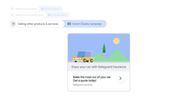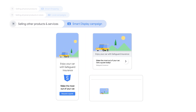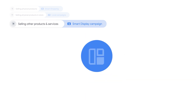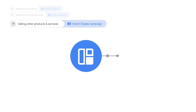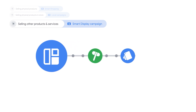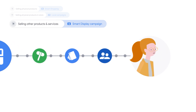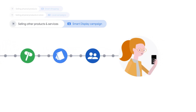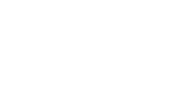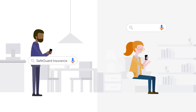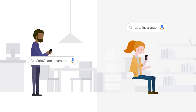Smart Display is the most effortless way to reach more customers across Google Display. This campaign type automatically adjusts your bids, creatives, and target audiences, and learns who your potential customers are in real time. For example, Smart Display can reach customers who've already purchased from you, as well as people who don't know your business yet.